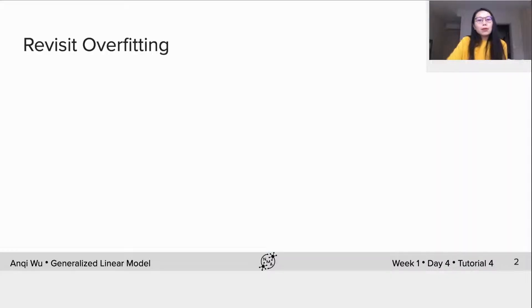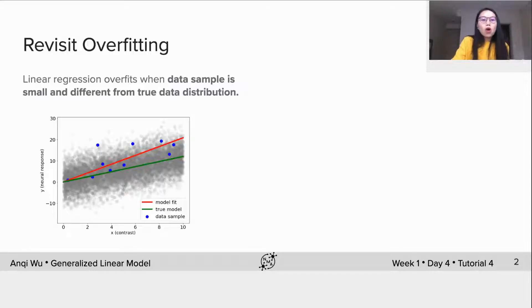Before introducing regularization, let's revisit overfitting on day 3. On day 3, we showed that in linear regression model, when data sample is small and the distribution of sample data is far from the true data distribution, the linear model could overfit to the data, resulting in a bad estimate.